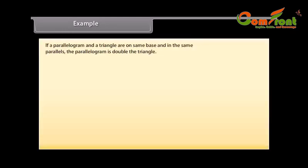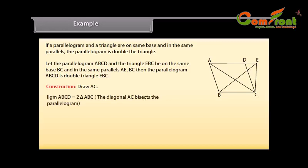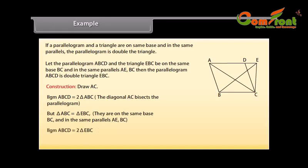Example: If a parallelogram and a triangle are on the same base and between the same parallels, the parallelogram is double the triangle. Let the parallelogram ABCD and the triangle EBC be on the same base BC and in the same parallels AE and BC. Construction: Draw AC. Since AC bisects the parallelogram, therefore the parallelogram ABCD is double triangle ABC. But triangle ABC is equal to triangle EBC because they are on the same base BC and in the same parallels AE and BC. Therefore, parallelogram ABCD is also double triangle EBC. Hence proved.